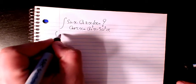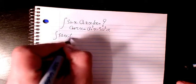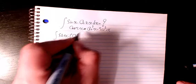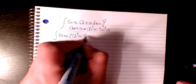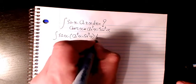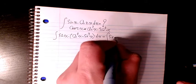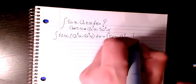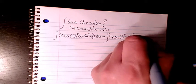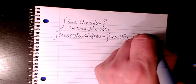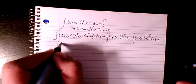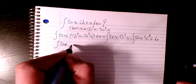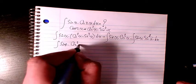So I convert it to sine x times cosine squared x minus sine squared x dx, and then it will be sine x times cosine squared x minus sine x times sine squared x times dx. So it will be sine x cosine x minus sine cubed x dx.